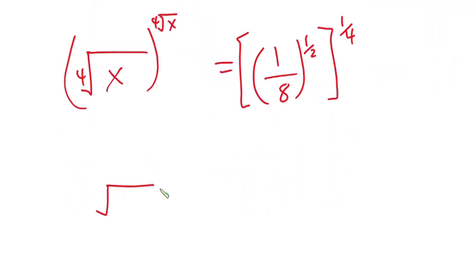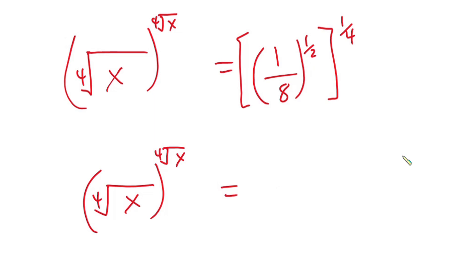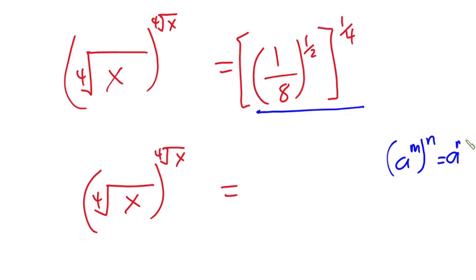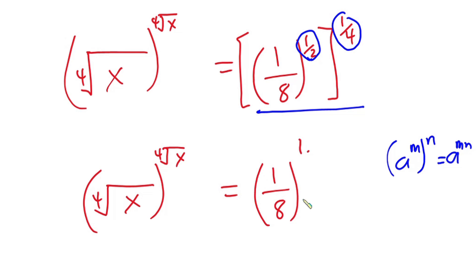So we have the fourth root of x, to the power of the fourth root of x. On the right side, using the rule that if you have a to the power m, to the power n, this is the same as a to the power mn. So I multiply the exponents: one half times one over 4, and this becomes 1 over 8 to the power 1 over 8.